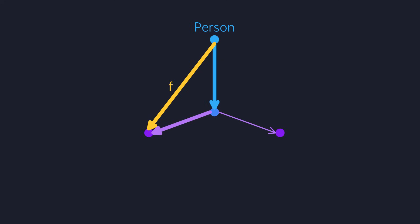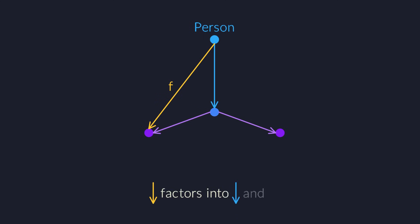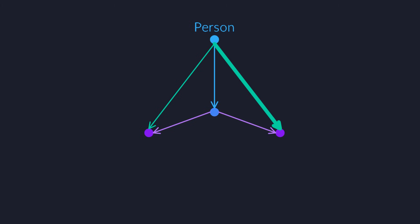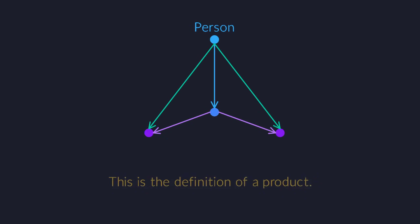In category theory lingo, we say that the function f factors into the two arrows that are defined on the product type. We can do something totally similar on the other side. When you ask a person for her name, you want to get exactly the same value as if you first construct a pair that contains the name, and then extract it again. The resulting diagram is the full definition for products in category theory.